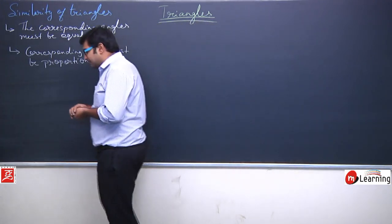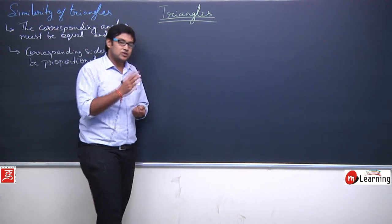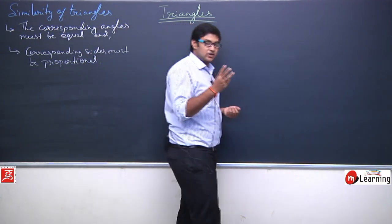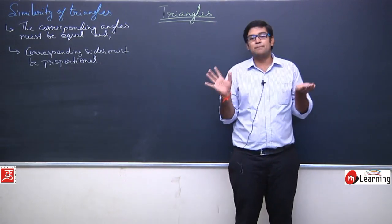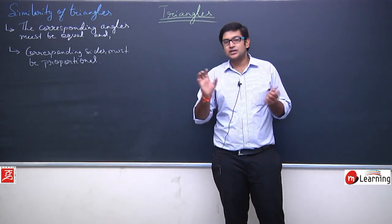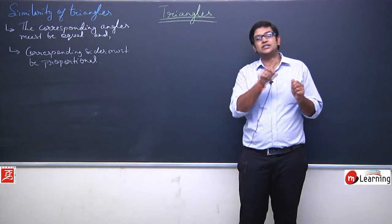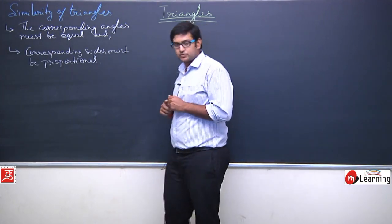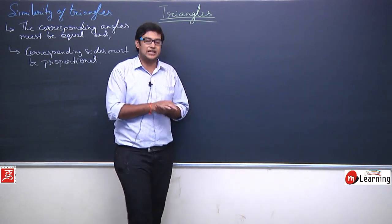So in the case of triangles, the same concept applies: for two triangles to be similar, the corresponding angles must be equal and the corresponding sides must be proportional. A triangle has 3 sides, so all three corresponding sides should be of the same ratio when comparing two triangles.